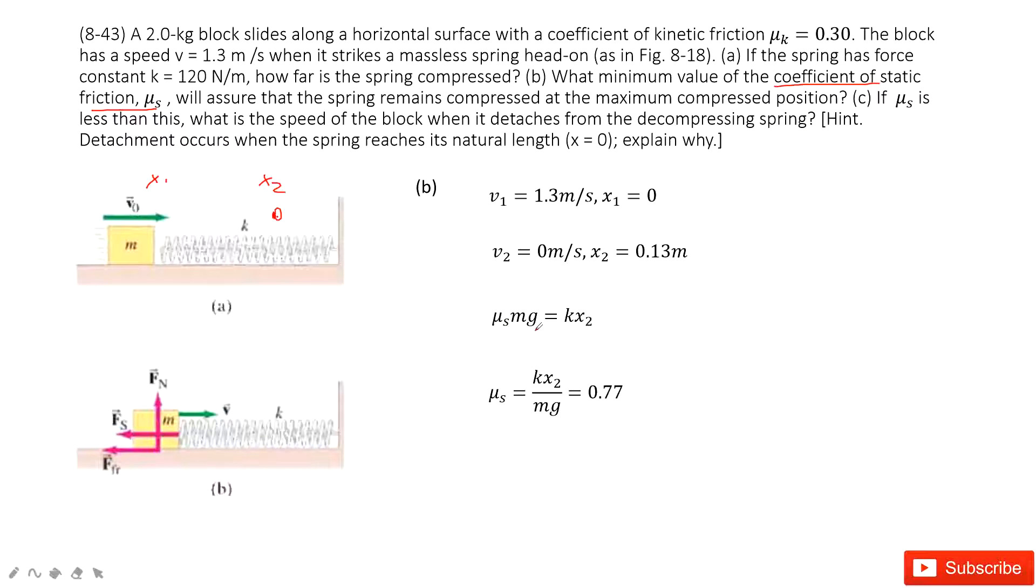So in this one, you can see very easily x2 is given, k is given, mass is given. You can get the μs very easily, 0.77. It's not difficult.